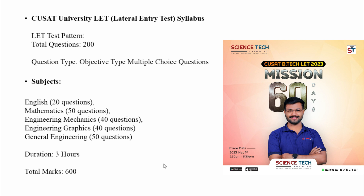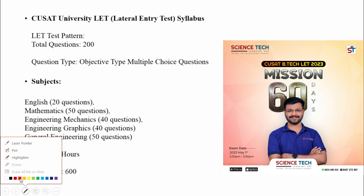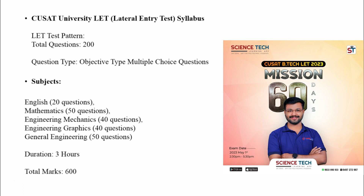One very important topic is Engineering Graphics. The exam is objective type multiple choice questions covering 5 topics: English 20 questions, Maths 80 questions, Mechanics 40 questions, Graphics 40 questions, and General Engineering 50 questions. Total marks are 60, one question is 3 marks. Negative marking applies — one question is minus 1.